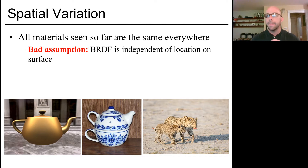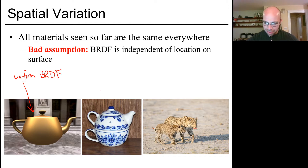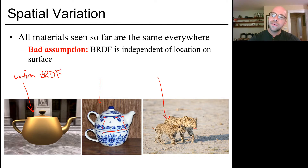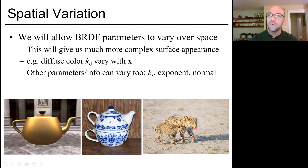The bad assumption we're fixing today is that the BRDF of a given object is independent of location on the surface. A uniform BRDF, like on the teapot on the left, doesn't look particularly realistic. Most objects look more like the second and third examples here, where texture is a function of position along the surface. We're going to allow BRDF parameters to vary over the surface.